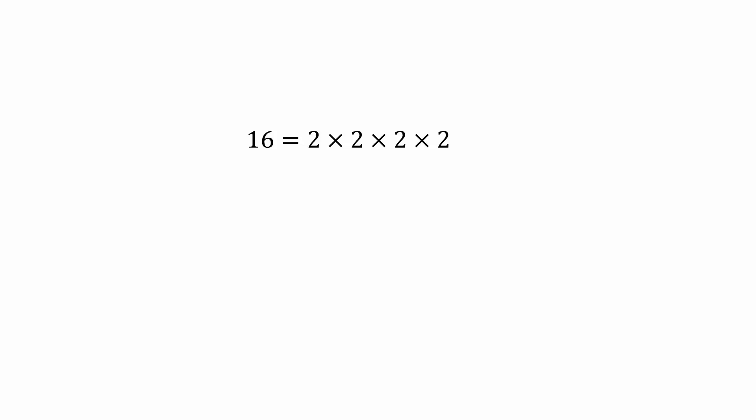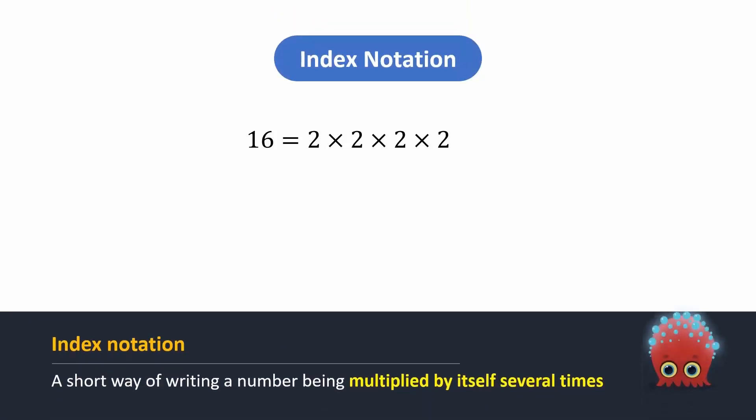Is it useful to express repeated prime factors in a shorter form? Yes, of course. We can express the repeated numbers through a method called index notation. It is a short way of representing a number being multiplied by itself several times. In other words, index notation shows repeated self multiplication.